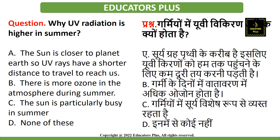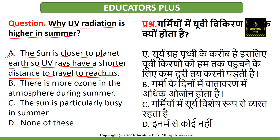The next question is: why is UV radiation higher in summer? The correct answer is option A — because the sun is closer to planet Earth, so ultraviolet rays have a shorter distance to travel to reach us. Because the sun is nearer to Earth during summer, radiation reaches faster and causes more heat and UV rays.